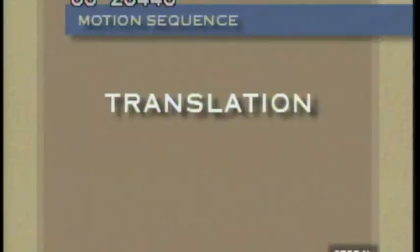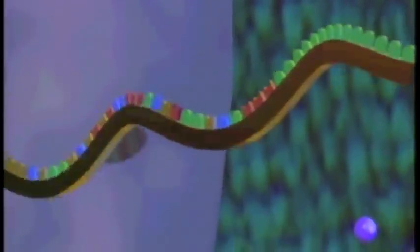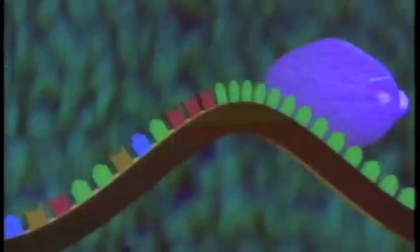Step 2 is translation. From message to product. As we enter the cell, the first thing we'll see is the nucleus. Coming out of the nucleus then, we have these ribosomes, which we'll discuss in a minute. And more importantly, we have the messenger RNA. Here's the message that was just made through transcription.